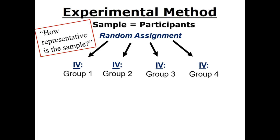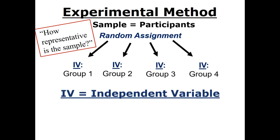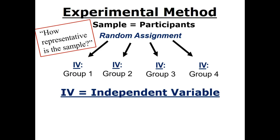This is where independent variables and dependent variables come in. The independent variable is the variable that the researchers control and intentionally create different groups to find out how changes in this variable will affect the outcome of the experiment.